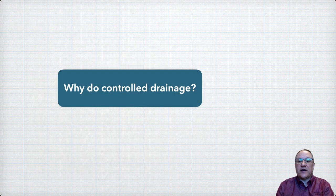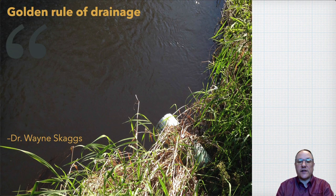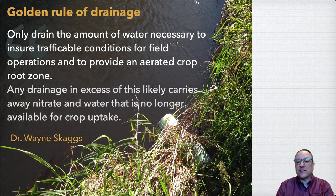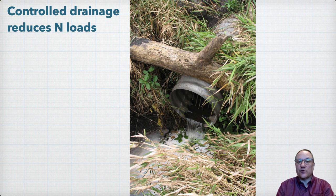Now that we have an understanding of what controlled drainage is, let's talk about why we would want to manage drainage using controlled drainage. The primary reasons are summed up in the Golden Rule of Drainage, coined by Dr. Wayne Skaggs, Emeritus Professor at North Carolina State University, which says: 'Only drain the amount of water necessary to ensure trafficable conditions for field operations and to provide an aerated crop root zone. Any drainage in excess of this likely carries away nitrate and water that is no longer available for crop uptake.' Controlled drainage can be used to reduce nitrate losses from drainage systems, primarily by reducing the amount of drain flow, which then reduces the load of nitrate leaving the system.